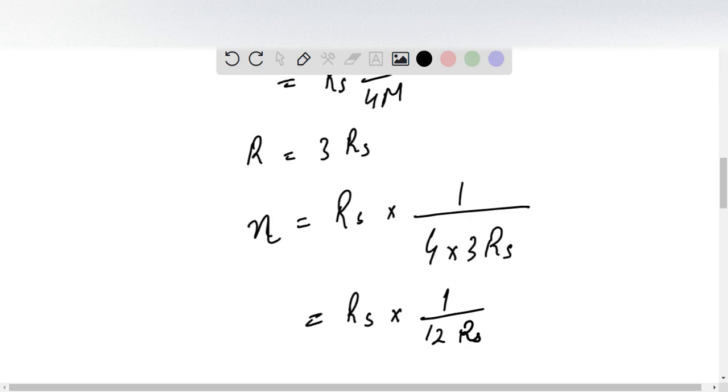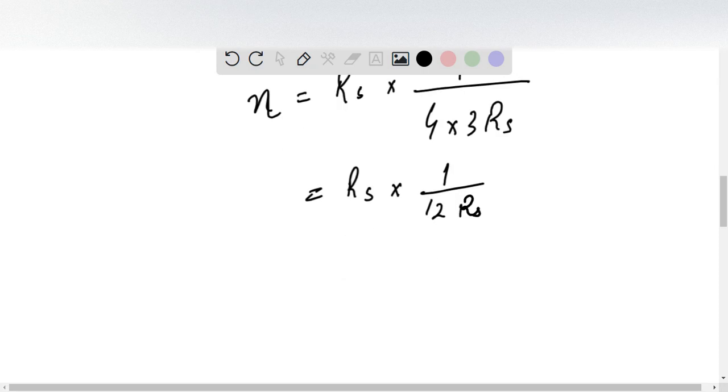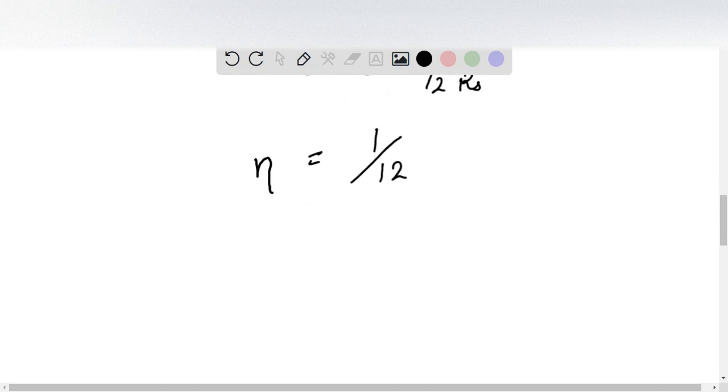At the end, we get 1/12. That's the value of η, the efficiency of the accretion luminosity of the disk of the non-rotating black hole.